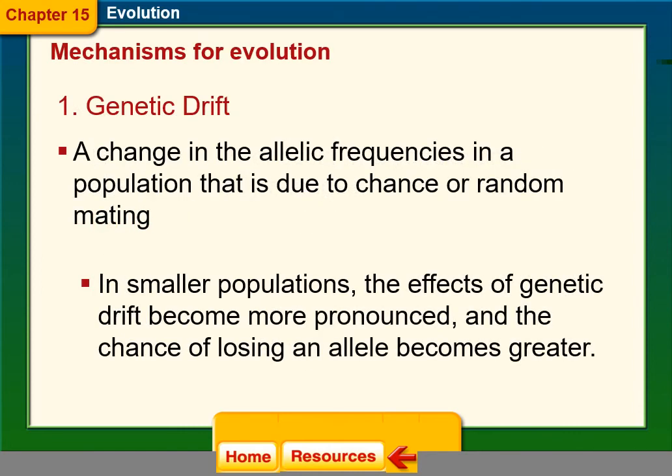Genetic drift is a change in allele frequencies in a population due to chance or random events. In small populations, this effect becomes more pronounced, and the chance of losing an allele — whether dominant or recessive — becomes greater.